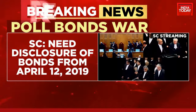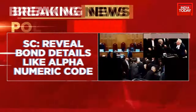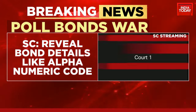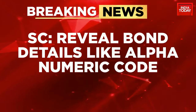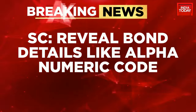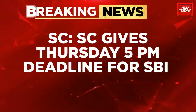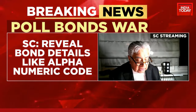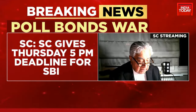The Supreme Court hearing is underway. The court has essentially said that disclosure of bonds from 2019, April 12th onwards is required, and that bond details including alphanumeric codes must be revealed. This comes after FICCI and ASSOCHAM, top industry bodies, spoke about the need for anonymity as far as the donors list is concerned, saying poll bond numbers should not be revealed.